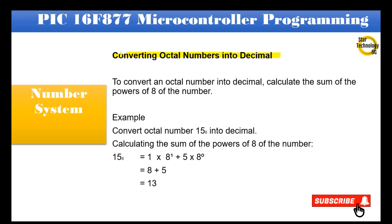Converting octal numbers into decimal: To convert an octal number into decimal, calculate the sum of the powers of 8 of the number. Example — Convert octal number 15 into decimal: 15 base 8 = (1 × 8¹) + (5 × 8⁰) = (1 × 8) + (5 × 1) = 8 + 5 = 13.